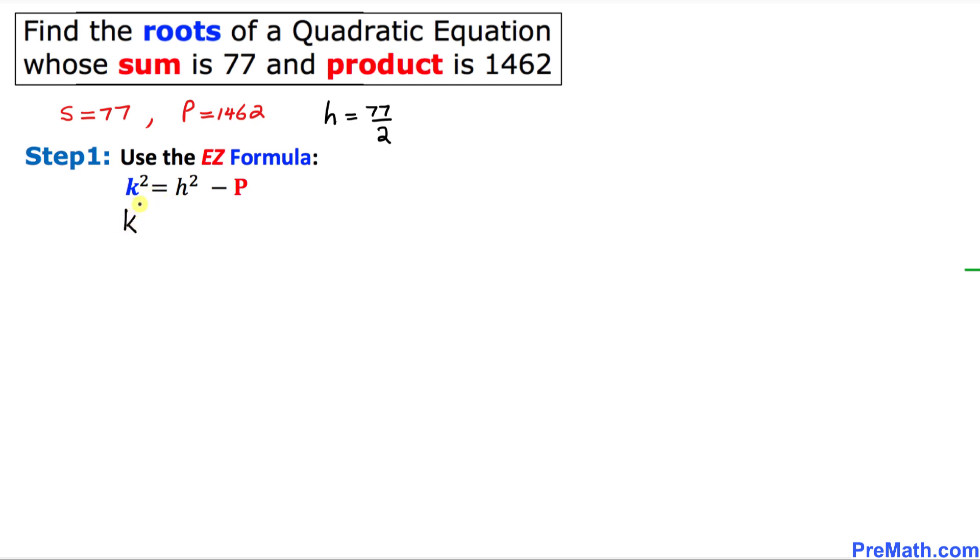So let's go ahead and write down K square equal to H, in our case is 77 divided by 2 square, minus 1462.